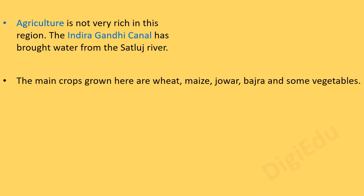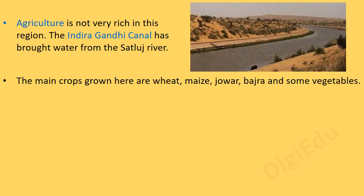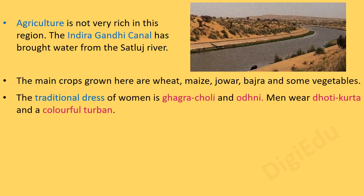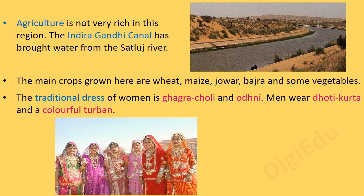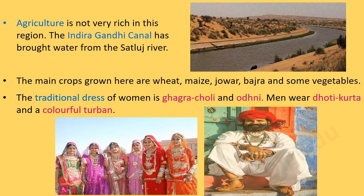Agriculture is not very rich in this region. The Indira Gandhi Canal has brought water from the Sutlej River. The main crops grown here are wheat, maize, jowar, bajra and some vegetables. The traditional dress of women is ghagra, choli and odhni. Men wear dhoti kurta and a colourful turban.